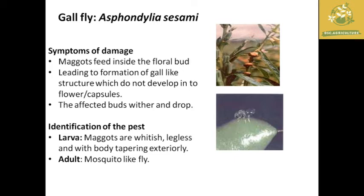Another important insect in gingelly is the gall fly, where the scientific name is Asphondylia sesami. The symptom of damage is that the maggot feeds inside the floral buds and the affected bud shrivels or drops from the plant. They also cause formation of a gall-like structure which leads to malformation of the flower or capsule.